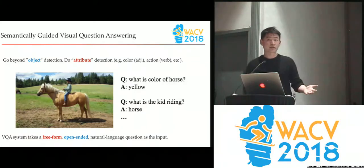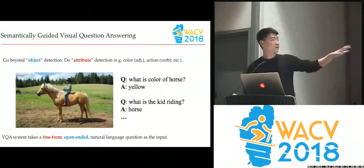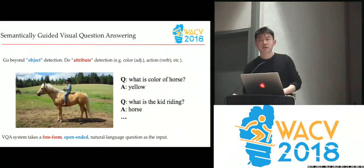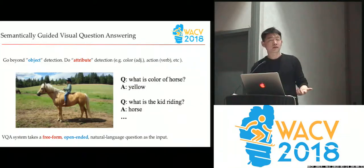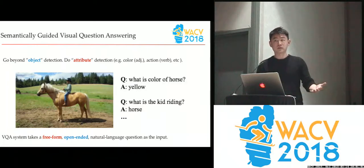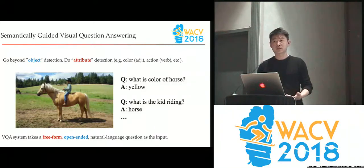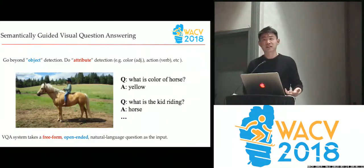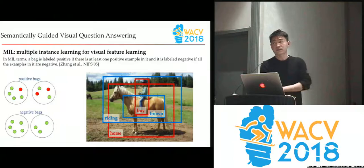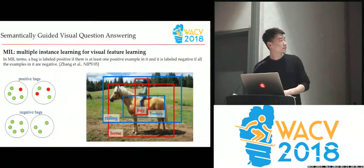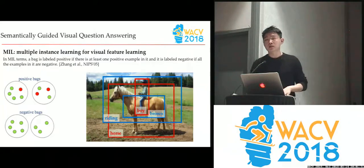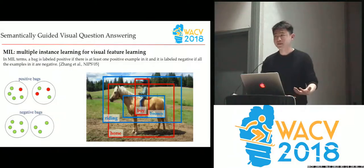Since questions are free-form, they can be any kind. For example, we can ask 'what is the kid riding?' — the keyword here is 'riding,' a verb. In this case you need to know where the verb is located. So our first motivation is to go beyond object detection and do attributes detection: verbs, adjectives, color, numbers, and so on. To address this we leverage a method from NeurIPS 2005, using weakly supervised multiple instance learning for attributes detection.